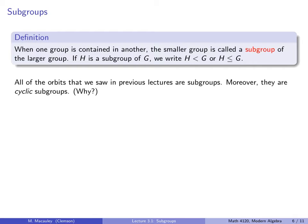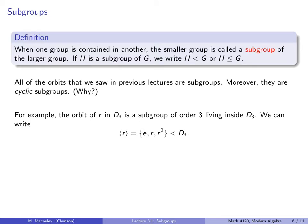So all of the orbits that we saw in previous lectures are actually subgroups. Moreover, they are cyclic subgroups, meaning that they are generated by a single element. For example, the orbit of R in D3 is a subgroup of order 3 that lives inside of D3. So we can write this as the subgroup generated by R is this set of three elements, which is a subgroup of D3. In fact, since the subgroup generated by R is really just a copy of C3, we may be less formal and write that C3 is a subgroup of D3. And this is a little bit sloppy, but we write it because we expect the reader to know what this means.